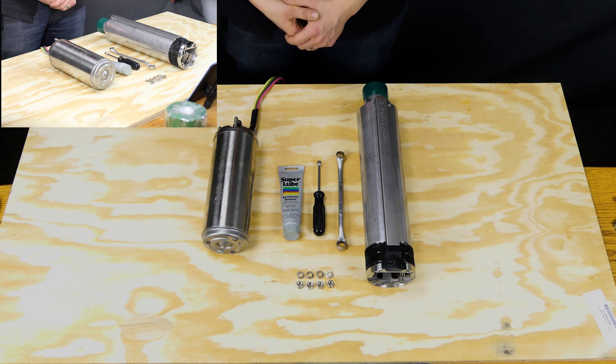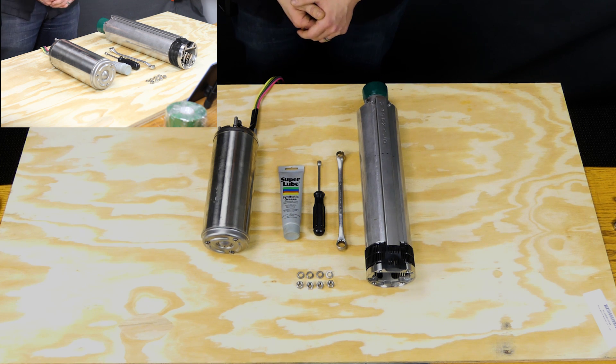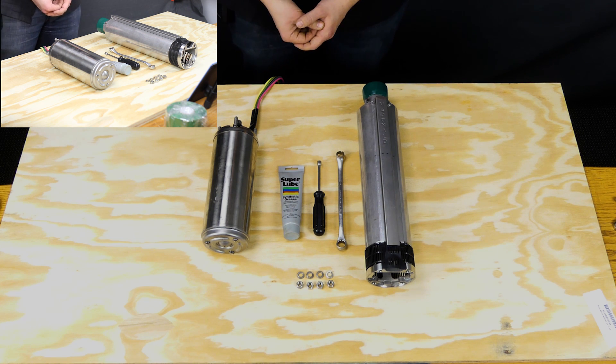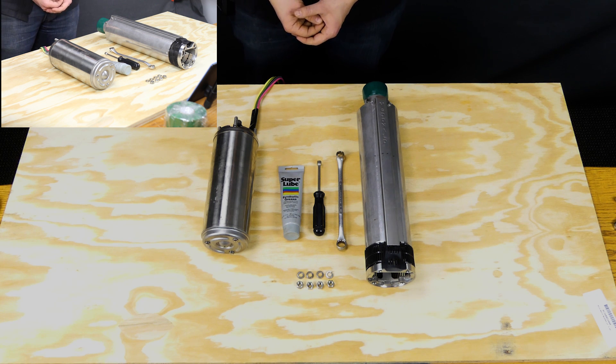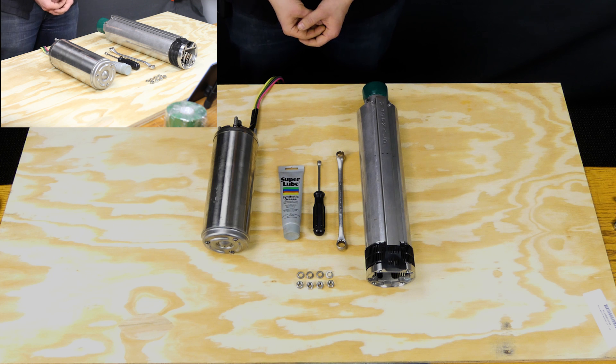By following these simple steps, you can ensure a professional quality installation and save yourself time and money down the road. We're going to be using a Franklin Electric motor and an AY McDonald pump end, but the steps to assemble are virtually the same for all 4-inch pump and motor combinations.